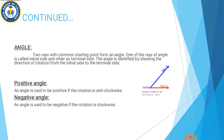An angle is said to be positive if the rotation is anticlockwise. An angle is said to be negative if the rotation is clockwise. Positive angle woh hai jisme rotation anticlockwise ho, to angle positive hoga. Agar rotation clockwise hai to angle negative hoga. Lekin sawaal yeh paida hota hai ke anticlockwise aur clockwise se kya muraad hai?